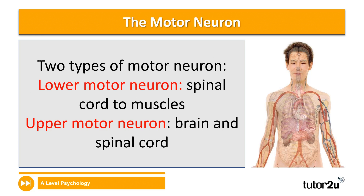To take your knowledge of the motor neuron a little further, you can talk about the different types of motor neuron. Technically there are two types: those that go from the spinal cord to muscles are known as lower motor neurons, and those that travel between the brain and the spinal cord are called upper motor neurons.